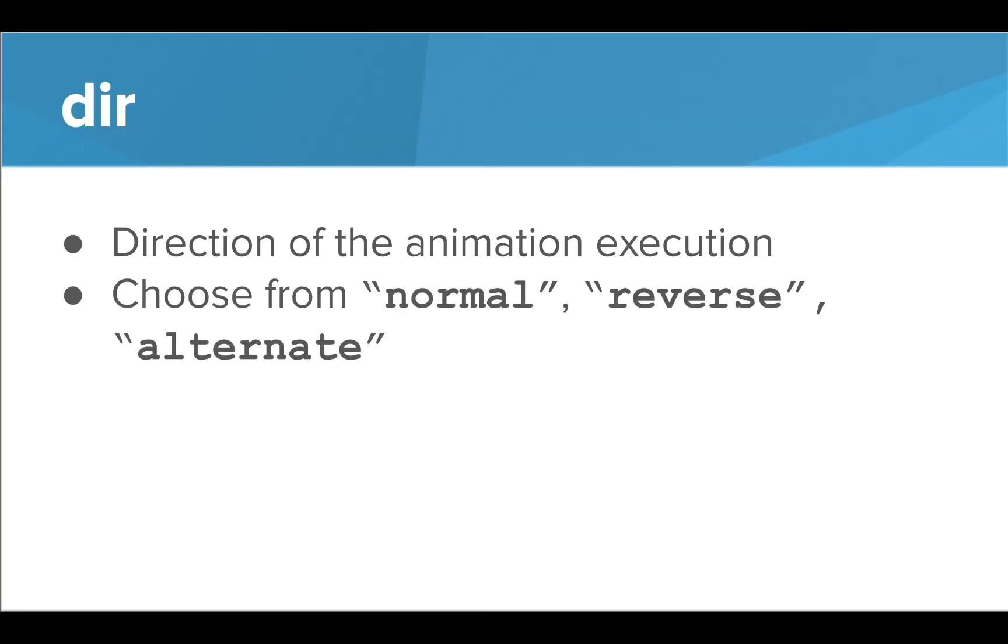Dir is used to specify the direction of the animation. The default value is normal, which means the animation is going to go from the from state to the to state. We can also specify reverse, which animates the object by starting at the to state and moving to the from state. When looping our animation, we have an additional option that we can use. Alternate switches the animation from normal to reverse each time. Let's take a look in the editor to get a better idea of how this works.